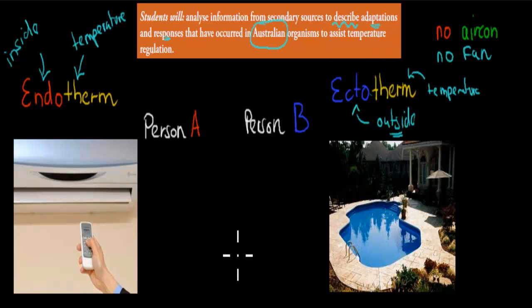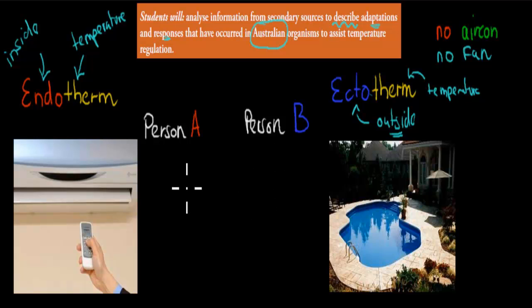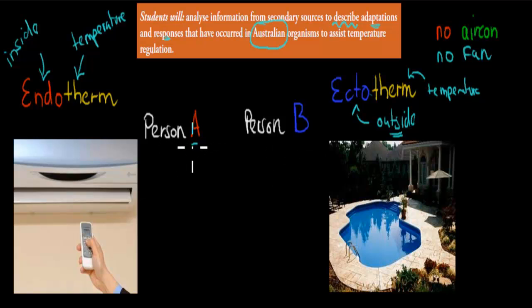To hone down that point, I've used an analogy. I'm going to show you that analogy so you can visualize it a bit more. I've got two people: person A, who's meant to be my endotherm, and person B, who's meant to be my ectotherm.